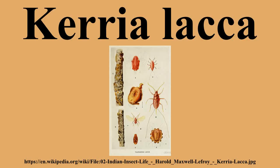More than 400 host plants have been noted. Three are used for the majority of commercial cultivation of the insect: palas, kusum, and ber. There are at least two strains of the insect that are characterized by aspects of the life cycle and the host plant preferences.